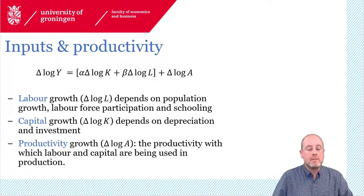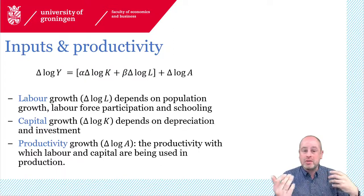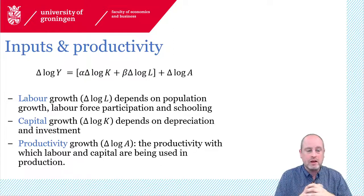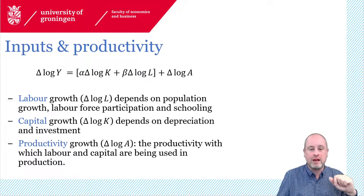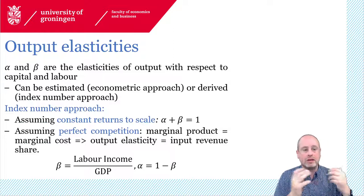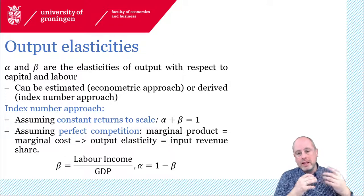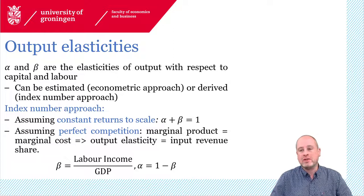This growth accounting decomposition requires data on growth of output and inputs so that we can back out the growth of productivity — the growth of outputs not due to inputs. But we still have two important parameters not measured: alpha and beta, the elasticities of output with respect to capital and labor. There are basically two approaches: you can estimate alpha and beta econometrically, or you can derive them based on economic theory — the so-called index number approach.